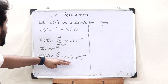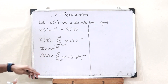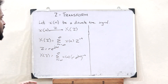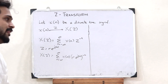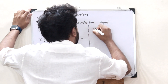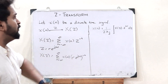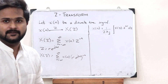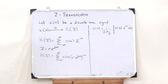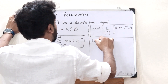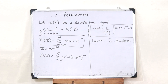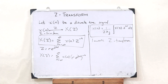Correspondingly, if we have the frequency domain signal X(Z) and need to obtain the discrete time signal from it, we can use the inverse Z-transform formula. That is: x(n) = (1 / 2πj) times the integral of X(Z) into Z raised to N minus 1 dZ. This is the Z-transform and this is the inverse Z-transform. This briefly sums up the Z-transform, which we use for the purpose of converting a discrete time signal from the time domain onto the frequency domain.